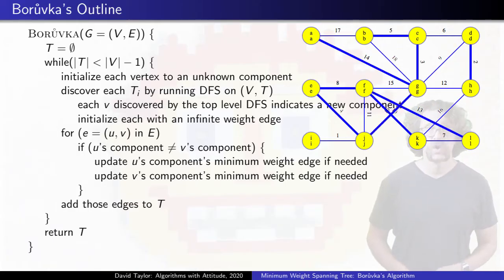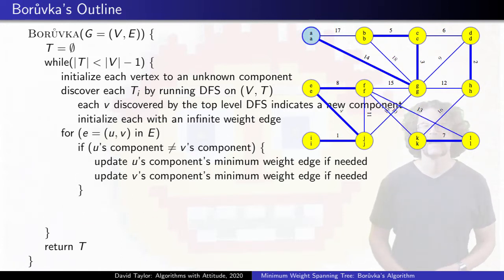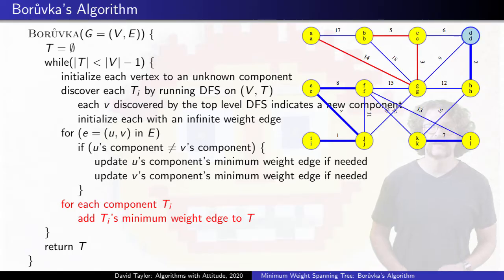After you have finished looking at all the edges, each component stores an edge that should be added to the minimum spanning tree. Add it. Just remember, an edge can only be added once, even if it is the minimum weight edge out of two different components.